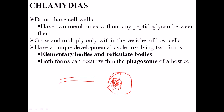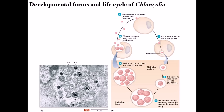Chlamydia uses two different types of cell forms inside the host cell for their pathogenicity. One is called the elementary body and the other is called the reticulate body. The elementary body is a very small cell of Chlamydia which starts to infect the host cell.